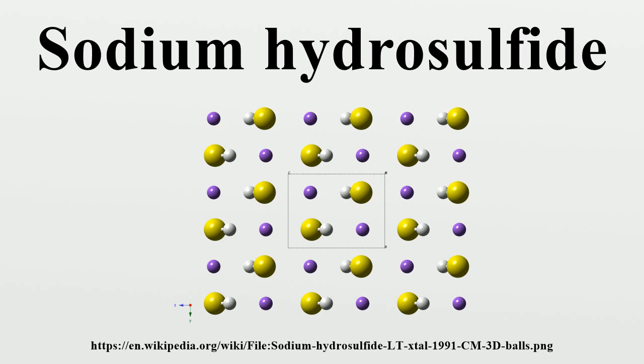Alternatively, in place of NaHS, H2S can be treated with an organic amine to generate an ammonium salt. Solutions of HS- are sensitive to oxygen, converting mainly to polysulfides, indicated by the appearance of yellow color.